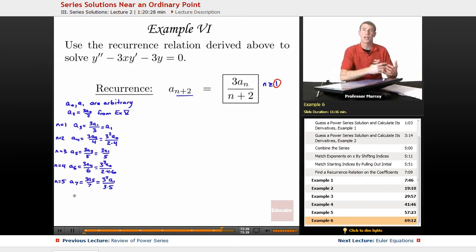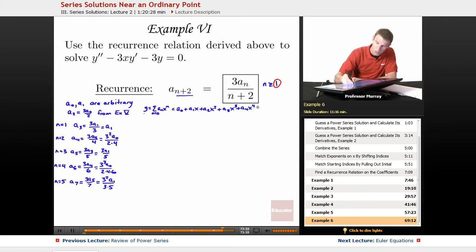So we're going to assemble all these coefficients and build ourselves a couple of series solutions. So, Y, our original guess for the solution was the sum of ANX to the N, starting at 0. So, this is A0 plus A1X plus A2X squared plus A3X cubed plus A4X to the 4th, and so on. A0, nothing we can do with that because it was arbitrary. A1X, nothing we can do with that.